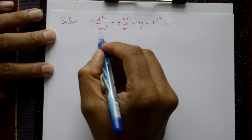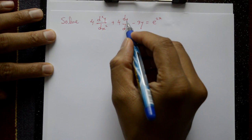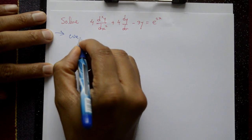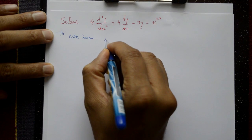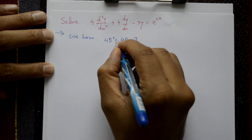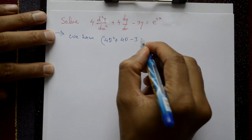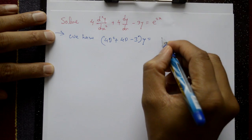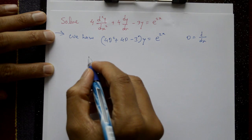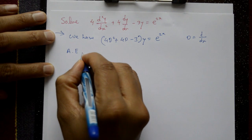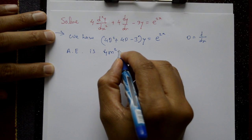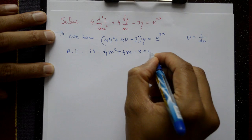Given equation: 4D²y/dx² + 4(D)y - 3y = e^(2x). We write this in operator form as (4D² + 4D - 3)y = e^(2x), where D stands for d/dx. Now the auxiliary equation is 4m² + 4m - 3 = 0.